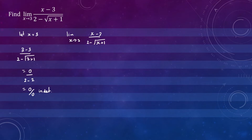What we'll try now is multiply the top and bottom by the conjugate of the denominator. That would be 2 plus the square root of x plus 1 divided by 2 plus the square root of x plus 1.